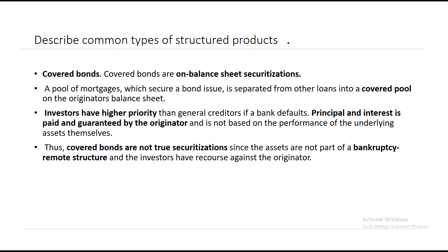Covered bonds are on-balance-sheet securitization — in a true sense, not securitization at all. A pool of mortgages that secures a bond issue is separated from other loans into a covered pool on the originator's balance sheet. It still appears on the balance sheet. Investors have higher priority than general creditors if a bank defaults. Principal and interest are paid and guaranteed by the originator, not based on the performance of the underlying assets. The risk is not transferred — it stays with the originator.